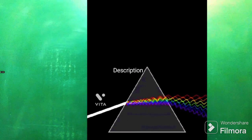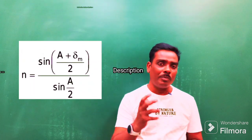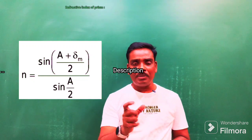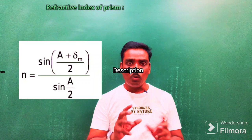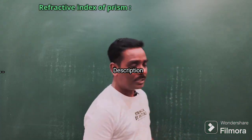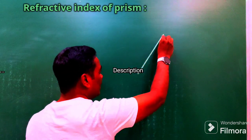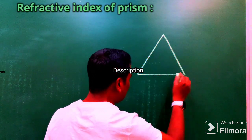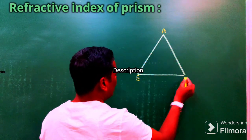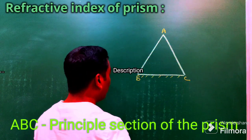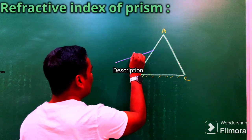Now we will calculate the refractive index of the prism in terms of the angle of minimum deviation and the angle of the prism. This is the most important derivation. Let us start with the diagram. Consider the principal section of the prism ABC, where BC is the base of the prism. A light ray is incident on the refracting surface AB.